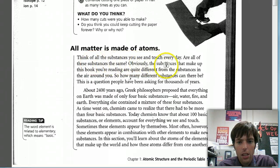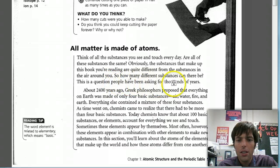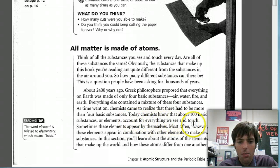Think of all the substances you see and touch every day. Are all of these substances the same? Obviously, the substances that make up this book you're reading are quite different from the substances in the air around you. So how many different substances can there be? This is a question people have been asking for thousands of years. About 2400 years ago, Greek philosophers proposed that everything on earth was made of only four basic substances: air, water, fire, and earth. Everything else contained a mixture of these four substances. As time went on, chemists came to realize there had to be more than four basic substances. Today, chemists know that about 100 basic substances, or elements, account for everything we see and touch.